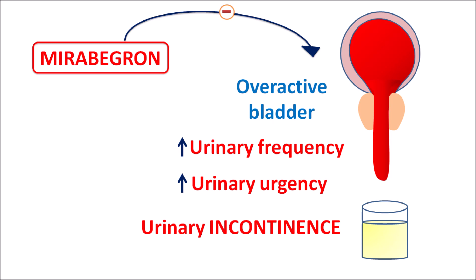In such conditions, Mirabegron can be used, which can reduce overactive bladder by acting as an agonist on beta-3 adrenergic receptors. It can be used either alone or in combination with anti-cholinergics. For example, it can be combined with solifenacin, which is another anti-cholinergic indicated for overactive bladder.